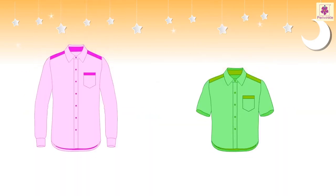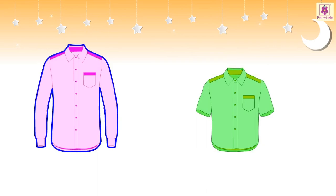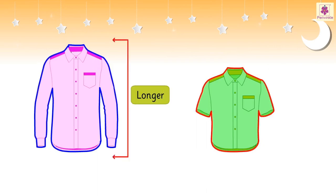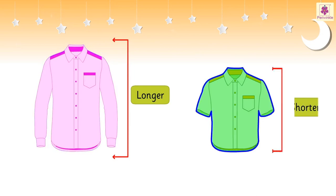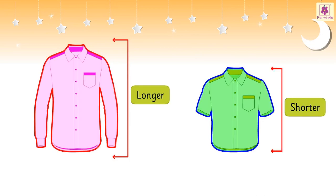For example, here the pink shirt is longer than the green shirt. Or we can say that the green shirt is shorter than the pink shirt.